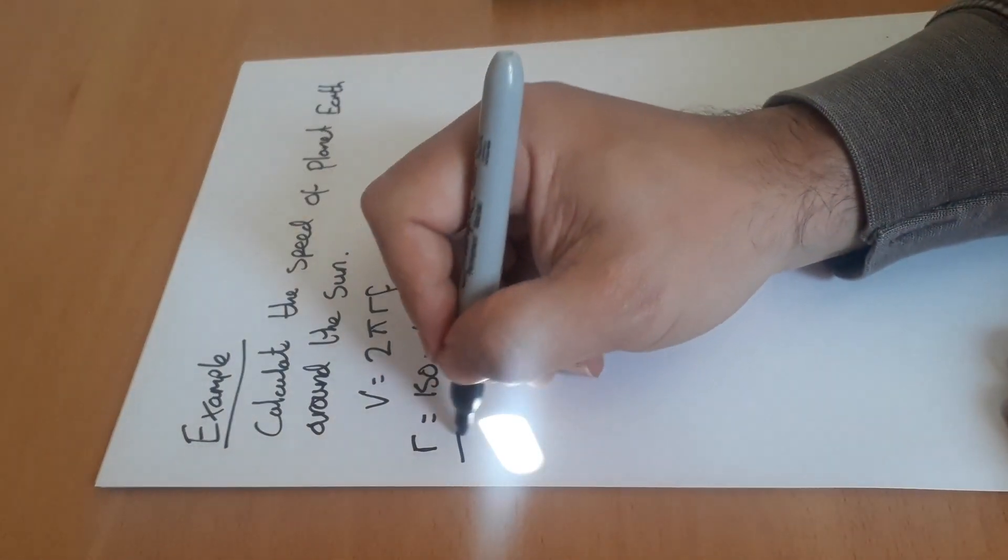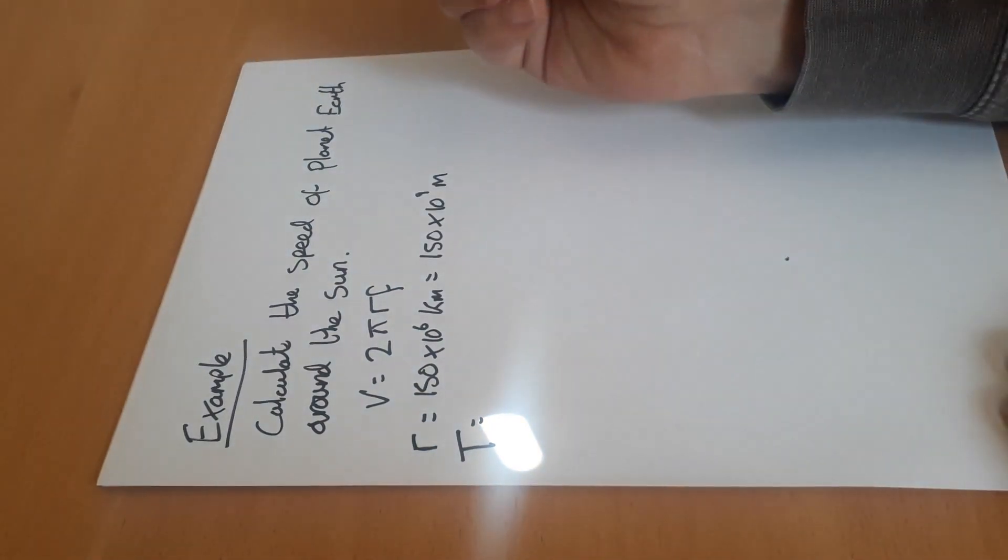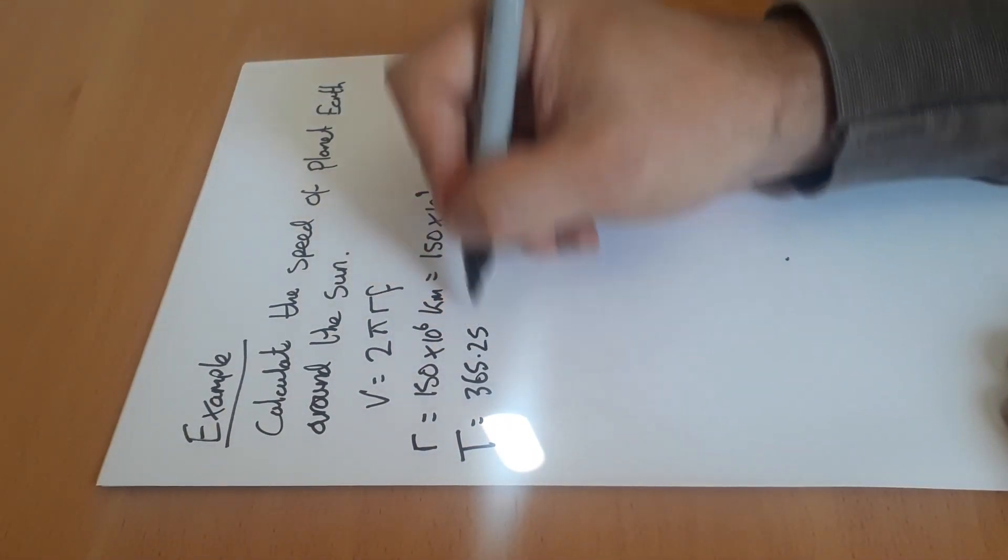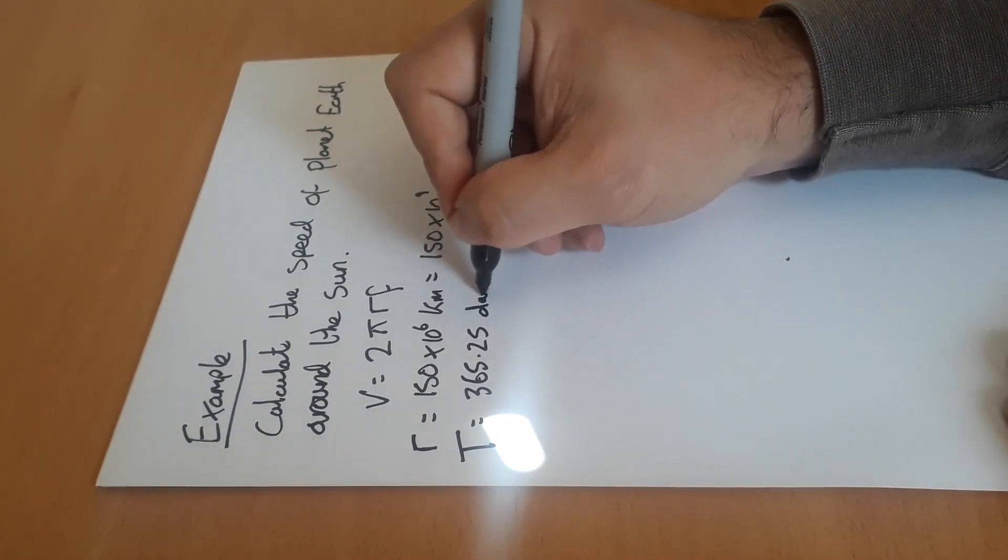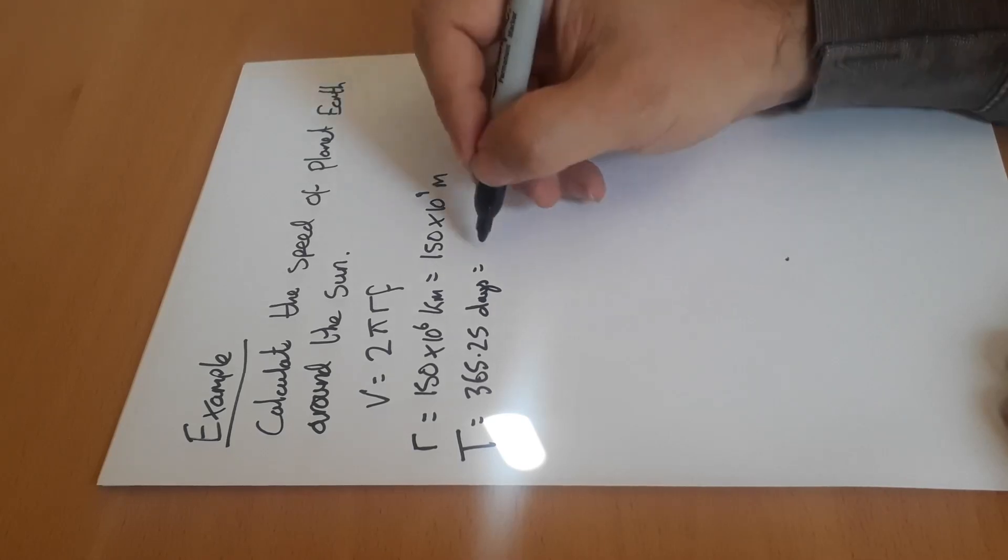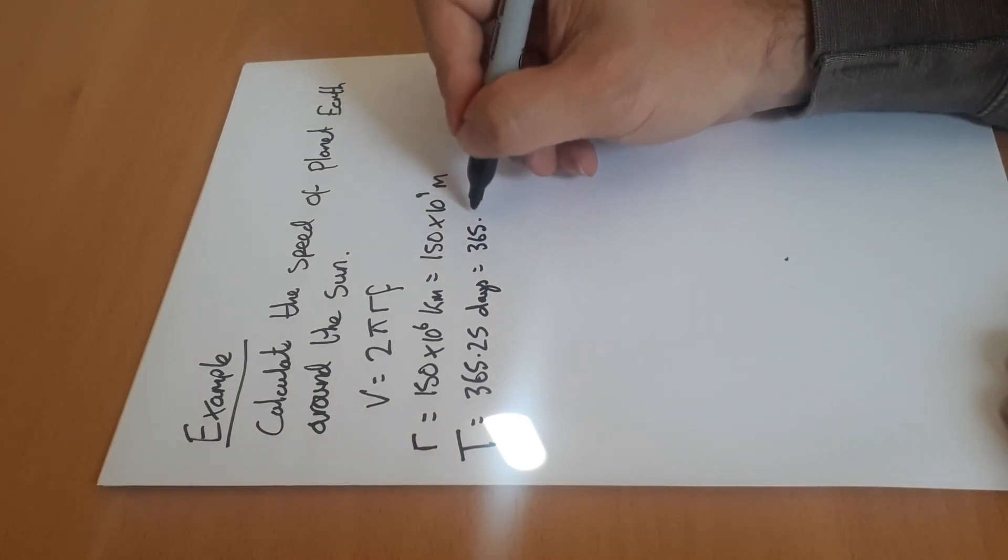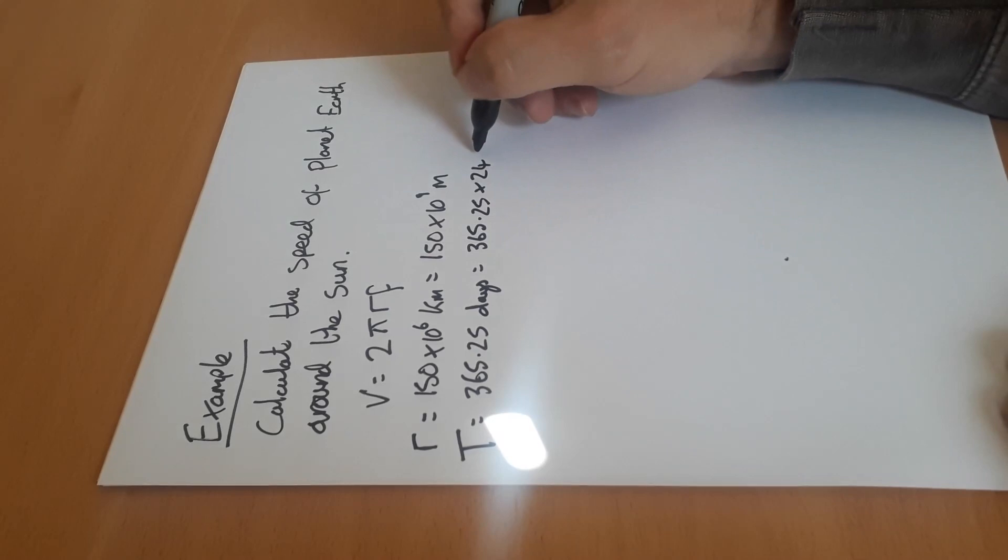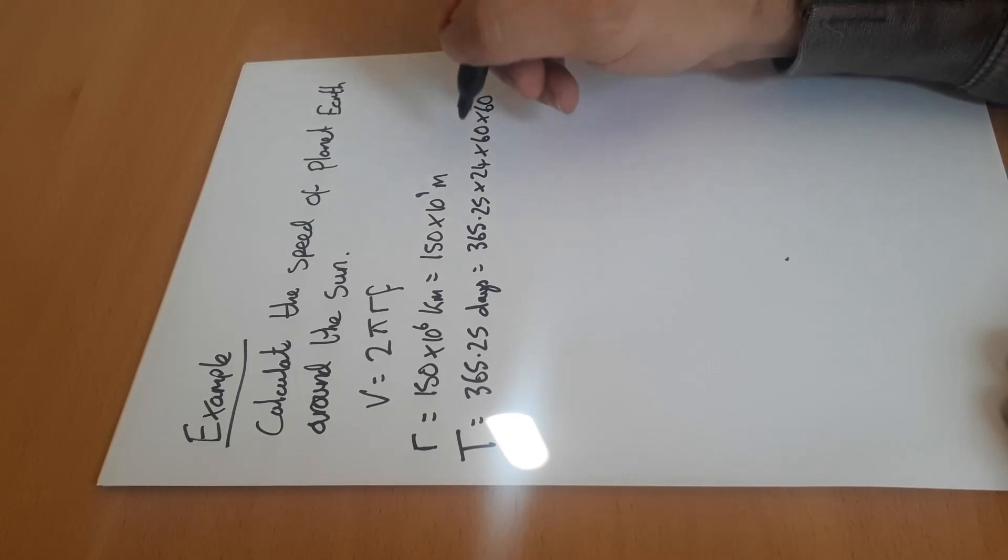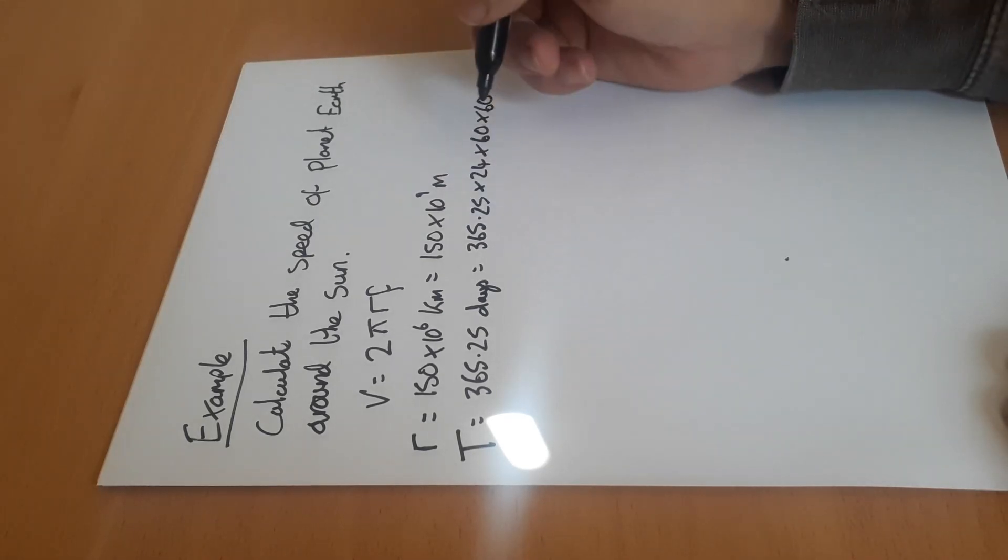And the time period for Earth - well it takes 365 and a quarter days to go around the Sun. Therefore that in seconds is going to be 365.25 times 24 times 60 times 60. 60 seconds in a minute, 60 minutes in an hour, 24 hours in a day, 365.25 days in a year.